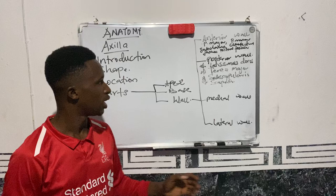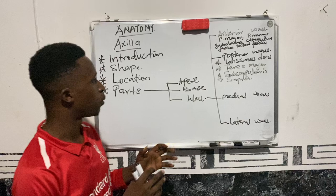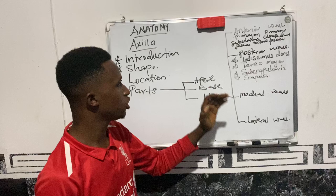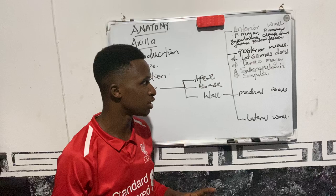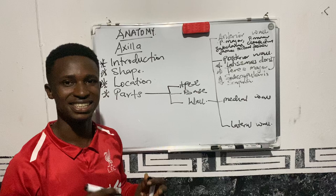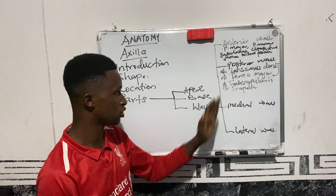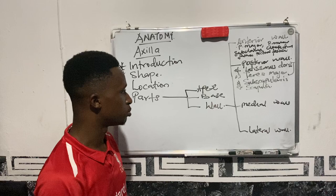Just as we have an anterior axillary wall and an anterior axillary fold — and in the previous video we saw that those two things are not the same — in like manner, we have the posterior axillary wall and the posterior axillary fold. The posterior axillary fold is the inferior-most part of the posterior axillary wall. The posterior axillary fold is formed by just the latissimus dorsi and the teres major muscle.